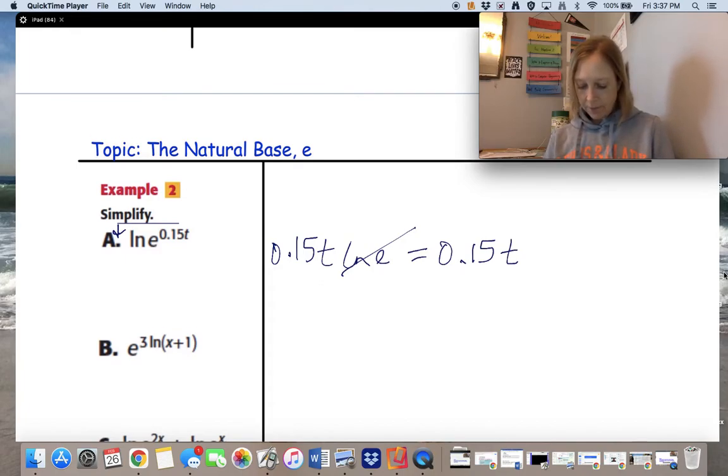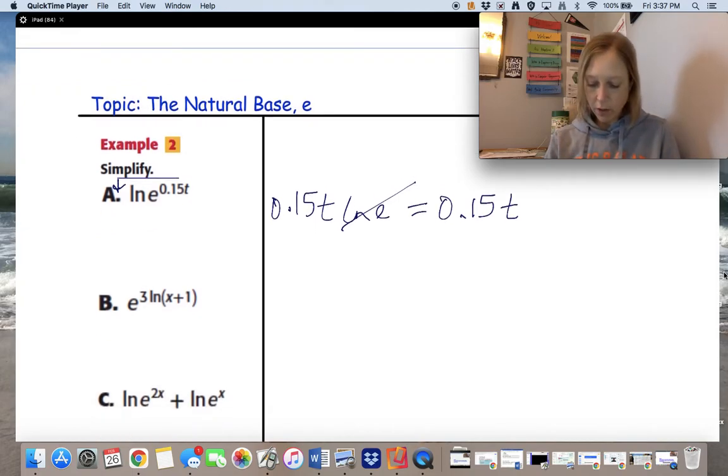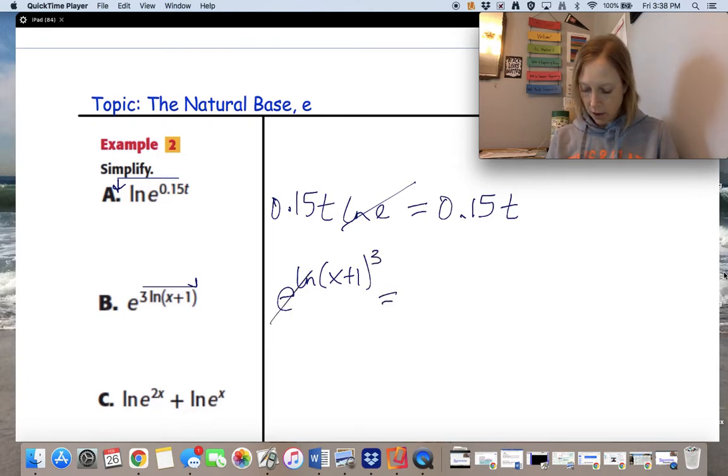Right, next one. Now we have an exponential expression with a logarithm in it. Remember like before, if we have the e and the ln together, we can cancel to make a 1. But that 3 is in the way. So what we're going to do is move the 3 from in front and make it an exponent, the opposite direction that we moved before. So e to the natural log of x plus 1 cubed. Those now cancel. And all we have is x plus 1 to the power of 3.